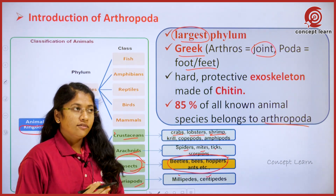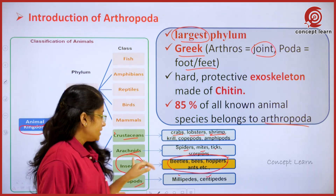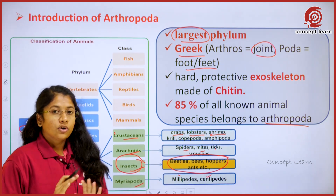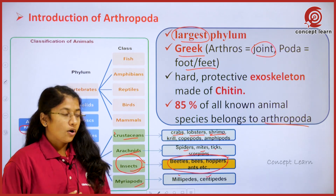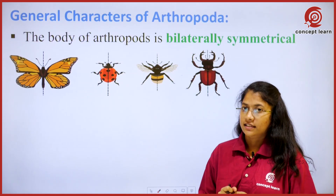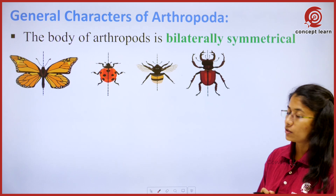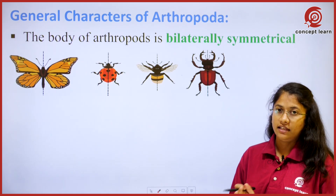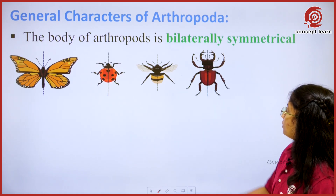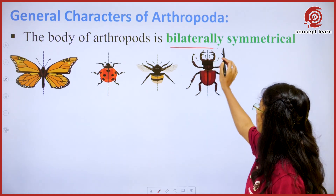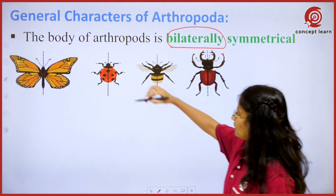Now let's see a few of the important characters which made these insects highly evolved compared to all other organisms on Earth. The first character is bilateral symmetry — it means that if you draw a medial line passing through the center of the body, it divides into two equal halves.